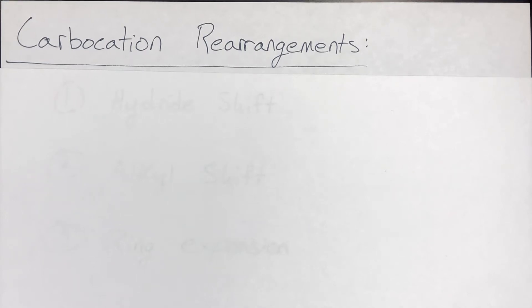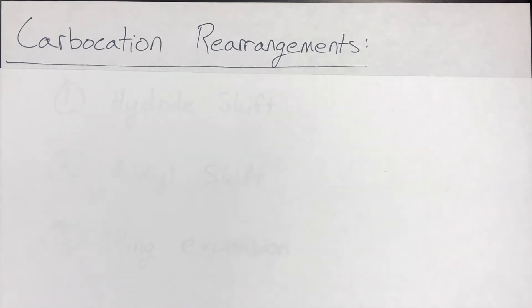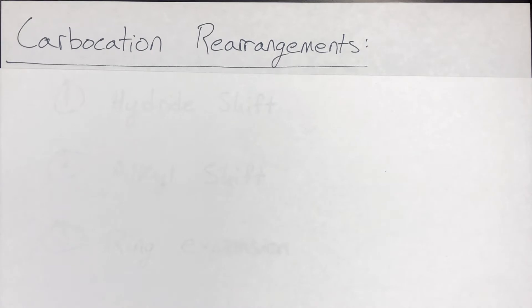In this video we'll take a look at carbocation rearrangements. This occurs when there is some energetic driving force to rearrange one carbocation to another. For example, if you go from a secondary carbocation to a tertiary, the tertiary is more stable, meaning that it has lower total energy. So that secondary carbocation will rearrange to the tertiary because of the energetics — the driving force is lower energy.